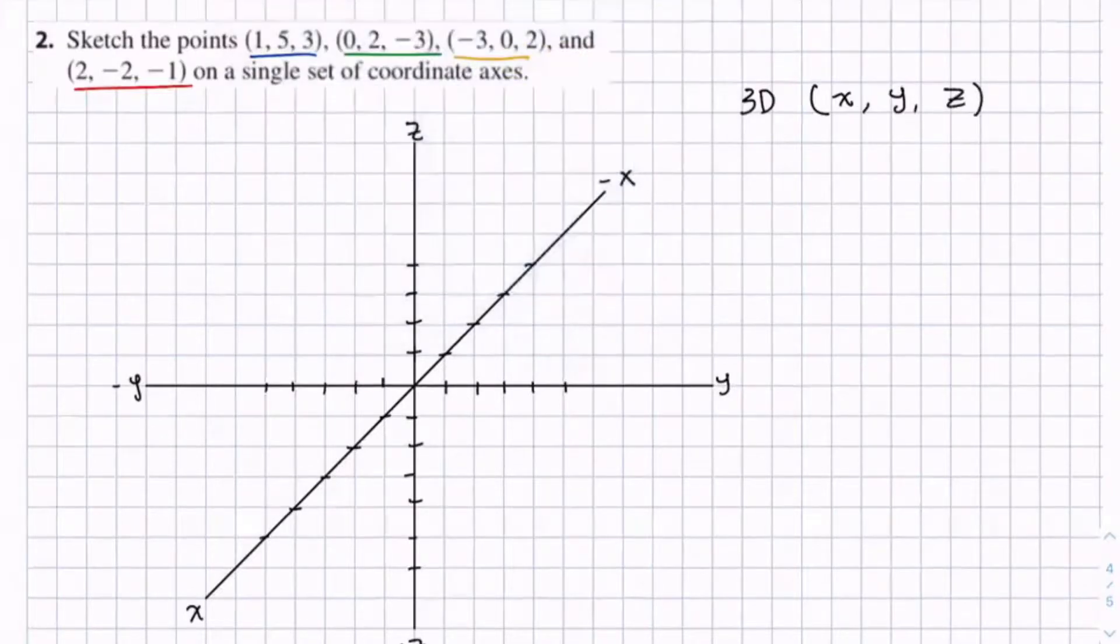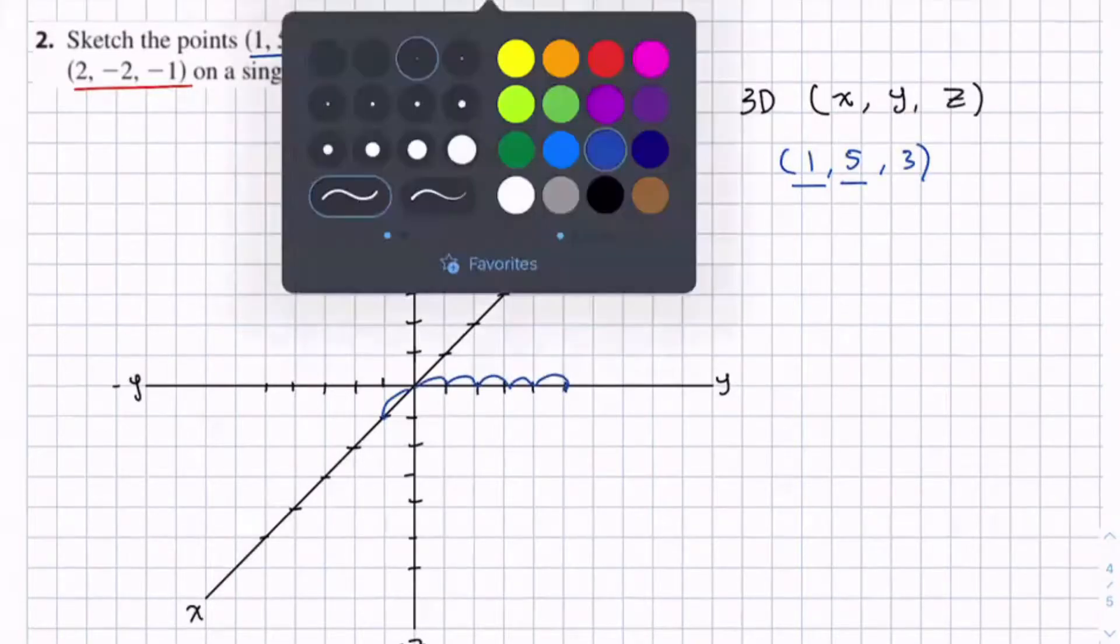So for the point (1, 5, 3), first thing we're going to do is find where this point will lie on the x-y plane. If we start with the x coordinate, we go 1 in the positive direction, so it's going to be right here. And then we go to the y component and find the positive y component 5: 1, 2, 3, 4, 5. It's going to be here. And we can draw a set of parallel axes.